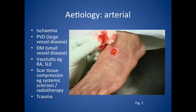Looking at the etiology of arterial leg ulcers, you get damage to an artery resulting in ischaemia to the skin. Backgrounds might include peripheral vascular disease, which is large vessel disease; diabetes mellitus, which is small vessel disease; vasculitis; rheumatoid arthritis leading to inflammation of the vessels; scar tissue compression such as from systemic sclerosis or radiotherapy; and trauma.